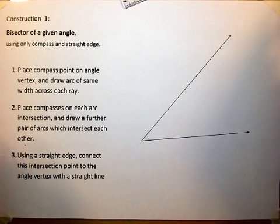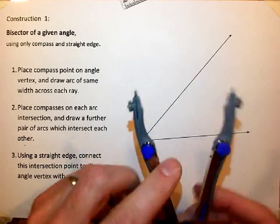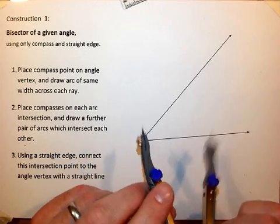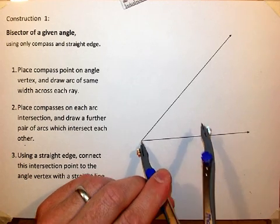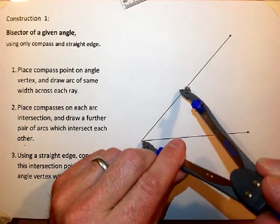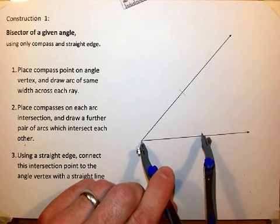Firstly, we take our compasses. We set the compass such that it is approximately 5 cm or so wide. Take the point, place it at the vertex of the angle, and draw an arc such that it creates two intersection points.